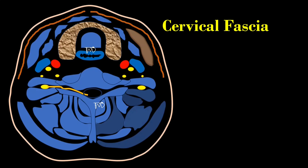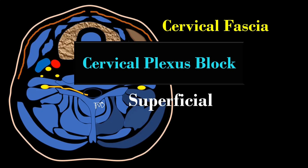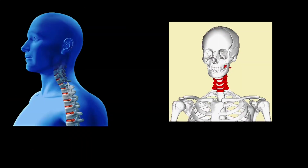We will cover how the three different cervical plexus blocks — the superficial, intermediate, and deep cervical plexus block — are related with the distribution of the cervical fascia. So without wasting time, let's begin.